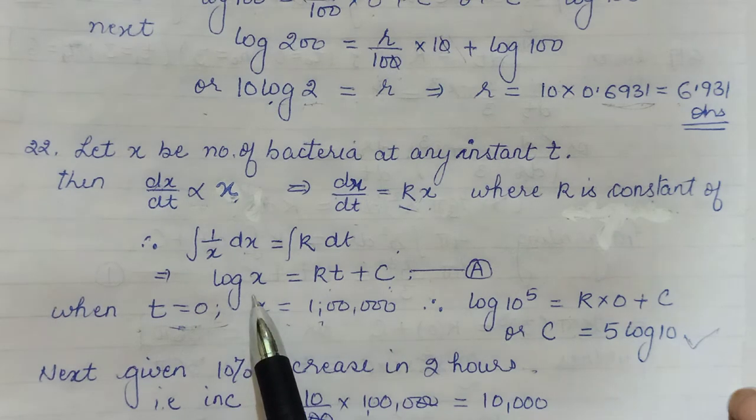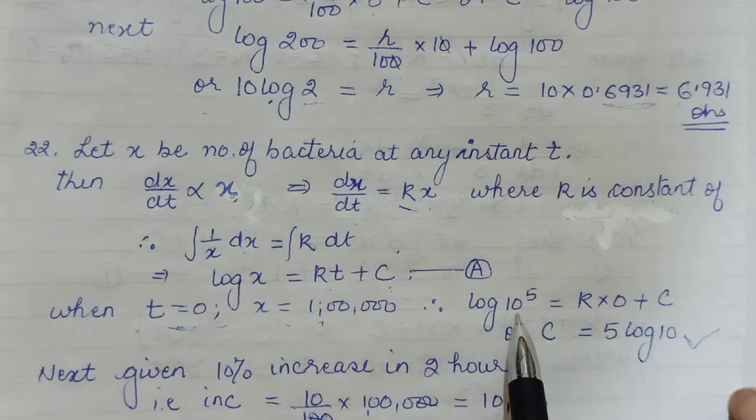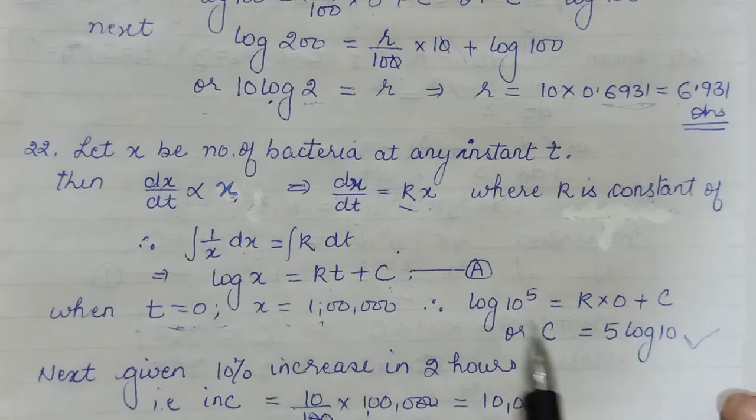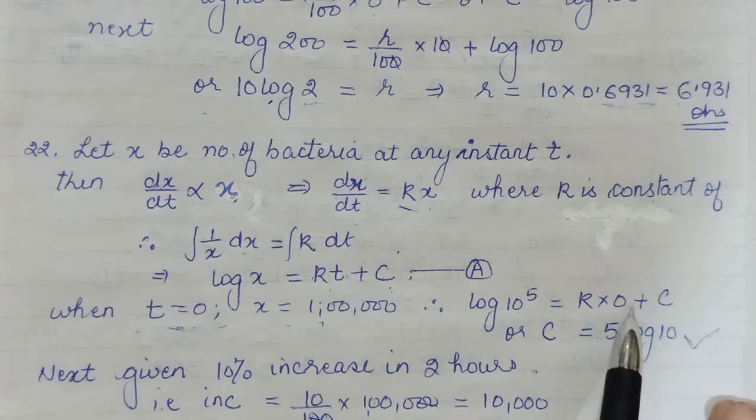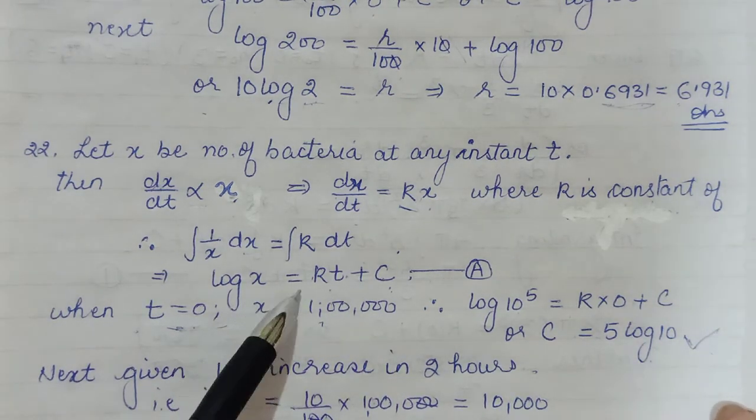Okay, putting this log of 1 lakh, I have written it in short form, 10^5. Or we can write it as 5 log 10, comes to the same, or 1 followed by 5 zeros, whatever. And t was 0. So we can evaluate our C from here. Now we also had to find k.